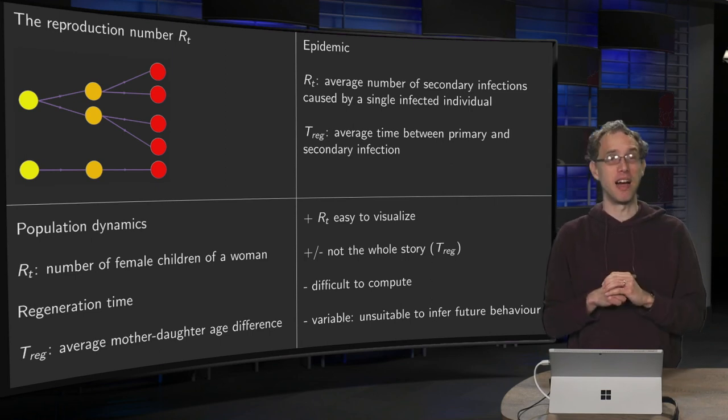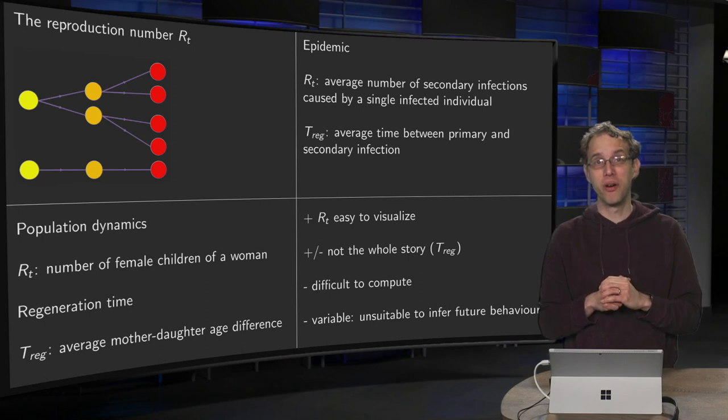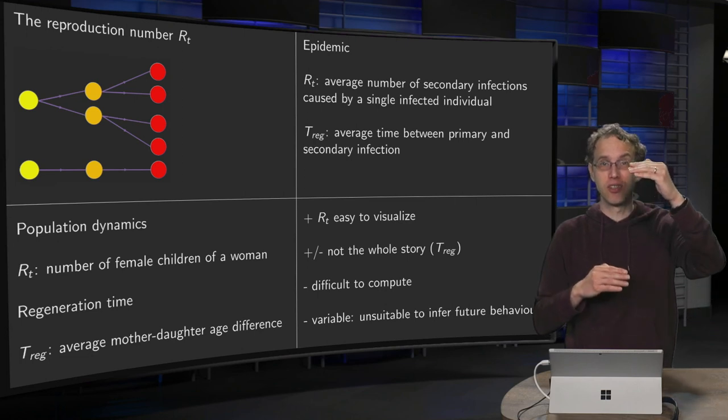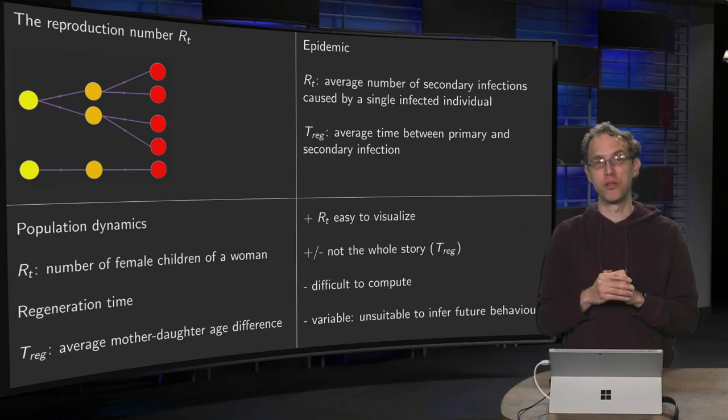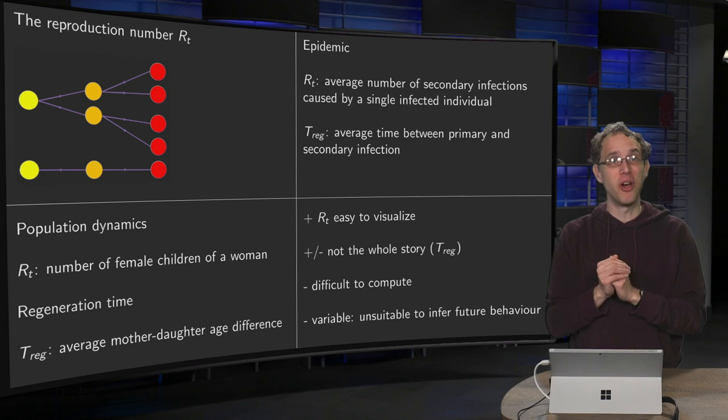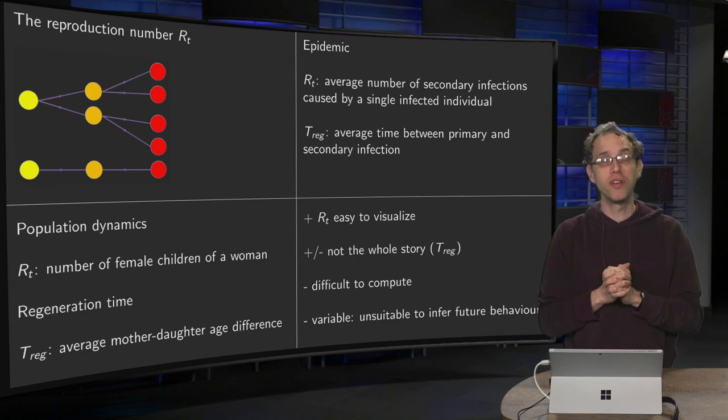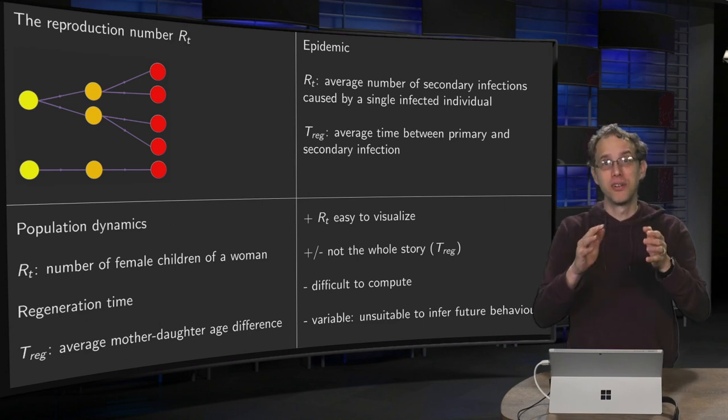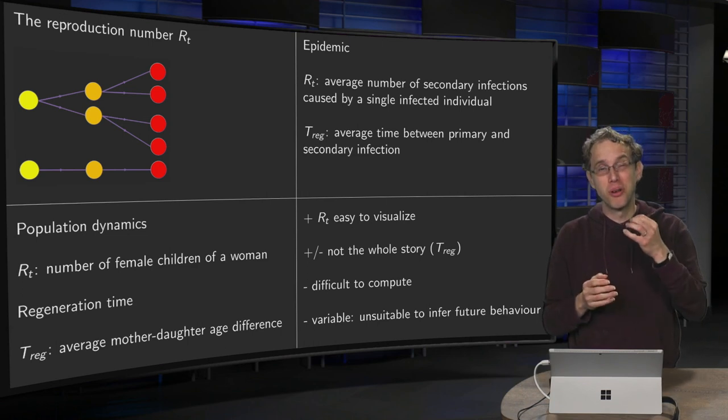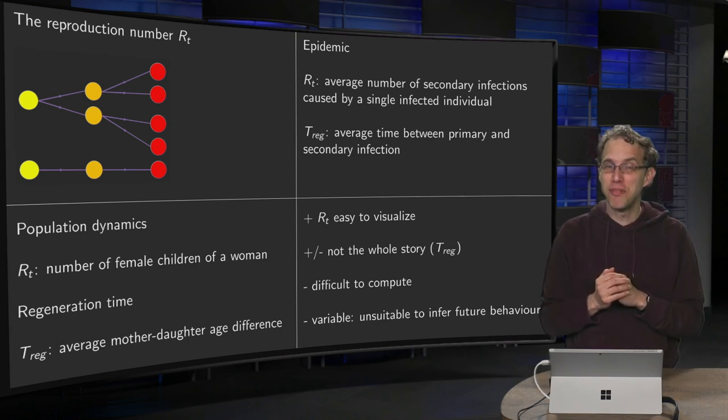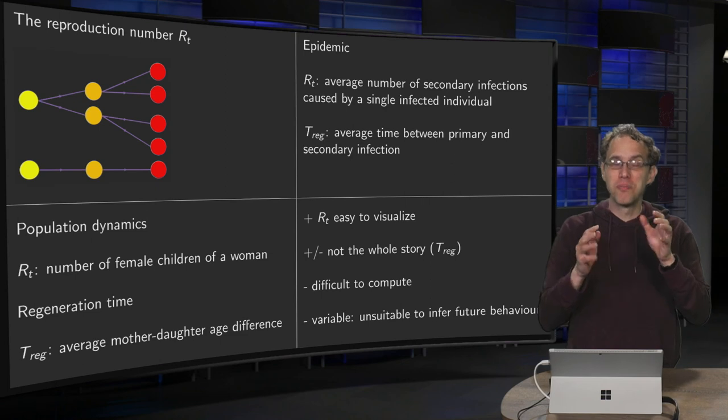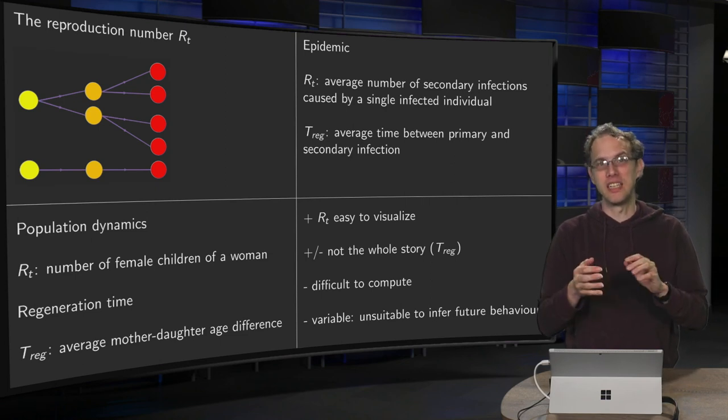A clear minus of the reproduction number, though, is that it will be challenging to compute due to the fact that those generations start to mingle at a certain point. So you will have to untangle them mathematically. You can do that. It will be the subject of a few more videos, but then you get from one disadvantage to another one because this computation is actually pretty difficult and pretty unstable in a sense.